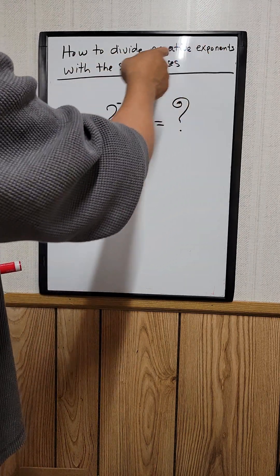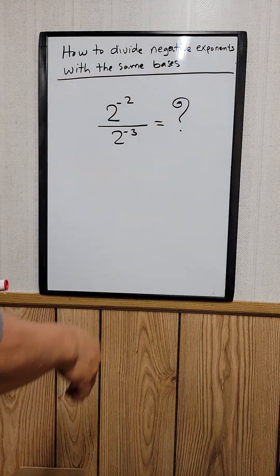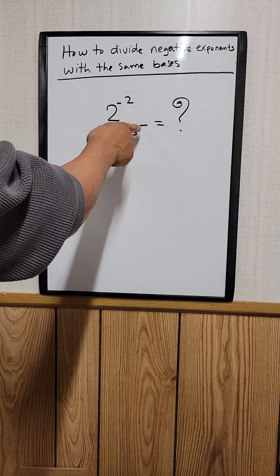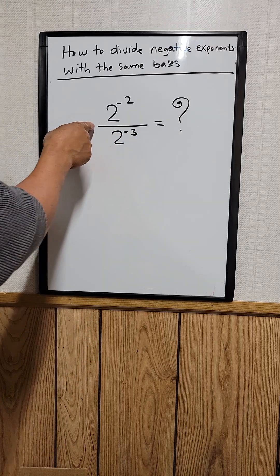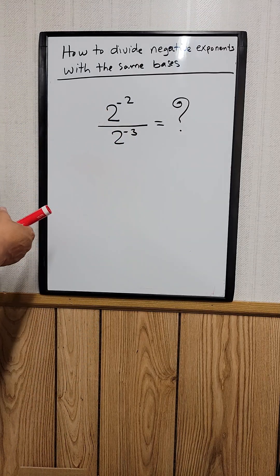How to divide negative exponents with the same basis. So 2 to the negative 2 divided by 2 to the negative 3. Both of them have the same basis right here. It's 2.